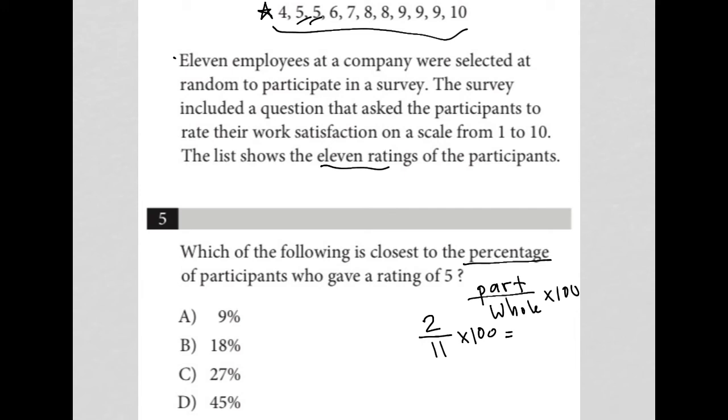Because this is the calculator section, I can just type in 2 divided by 11 in my calculator. I get 0.18 repeating. And I multiply that by 100 and I get 18, basically 0.18 repeating as a percentage. And then the closest, since it says what's the closest to the percentage, would have to be choice B, 18%.